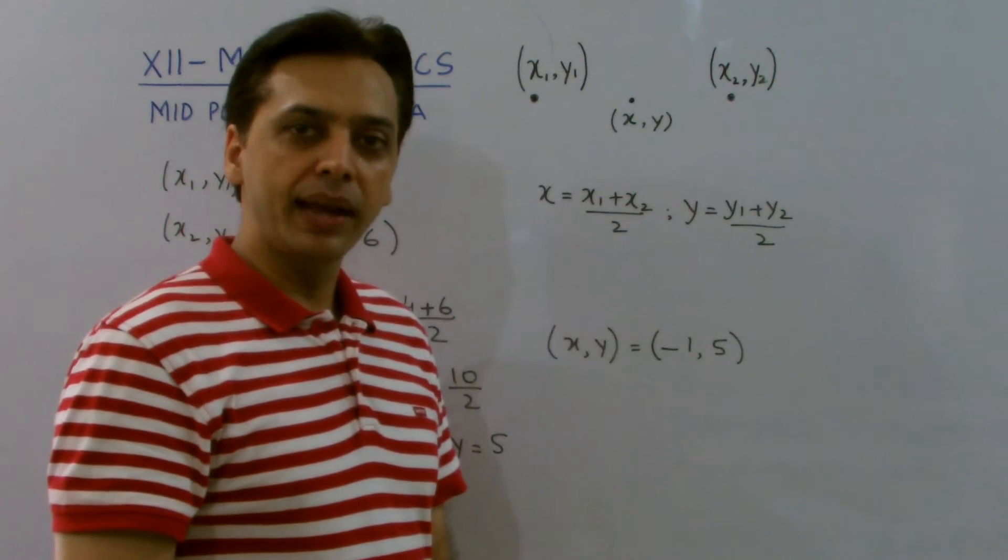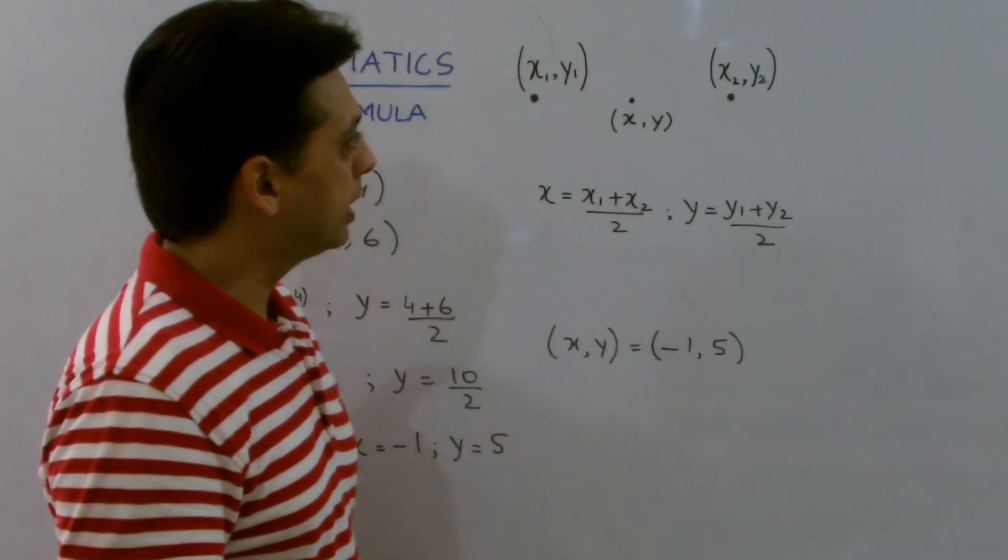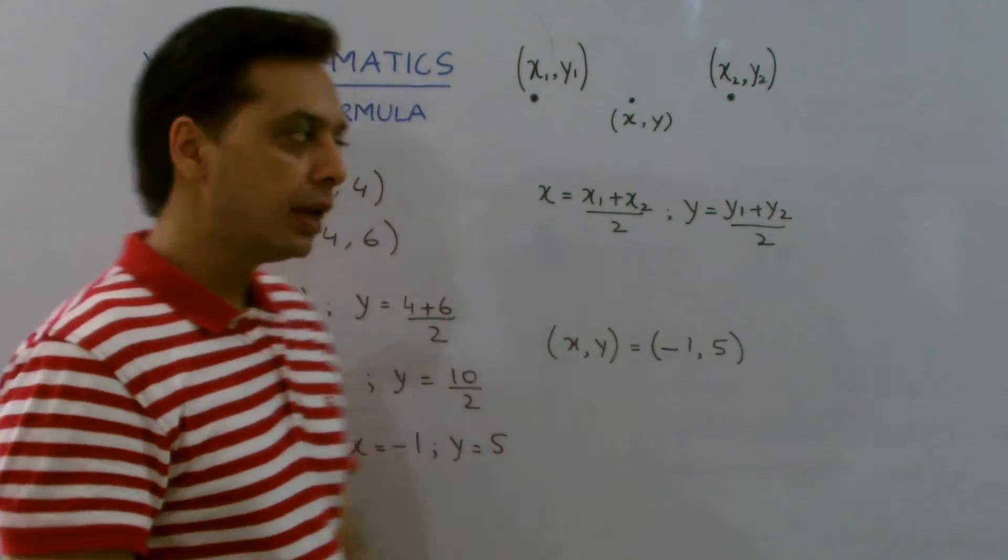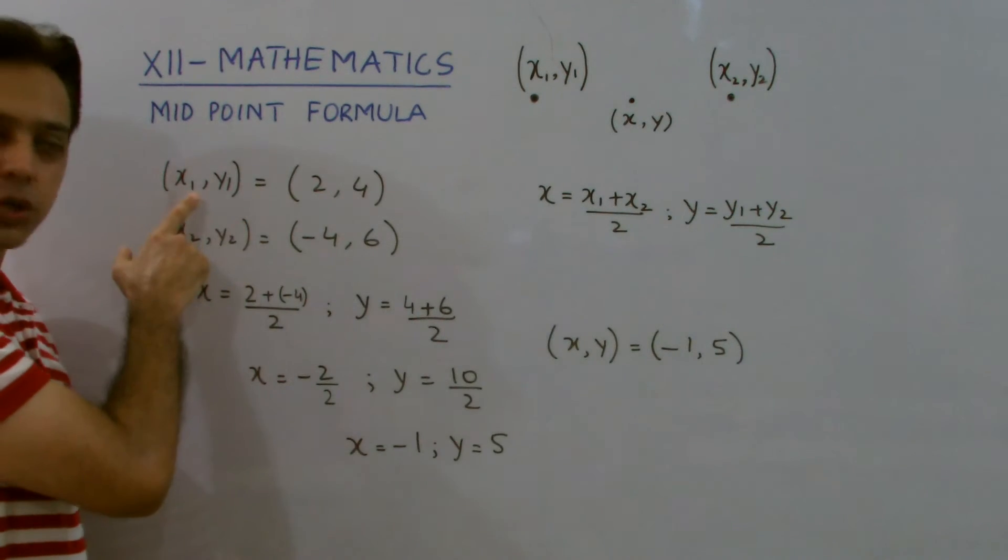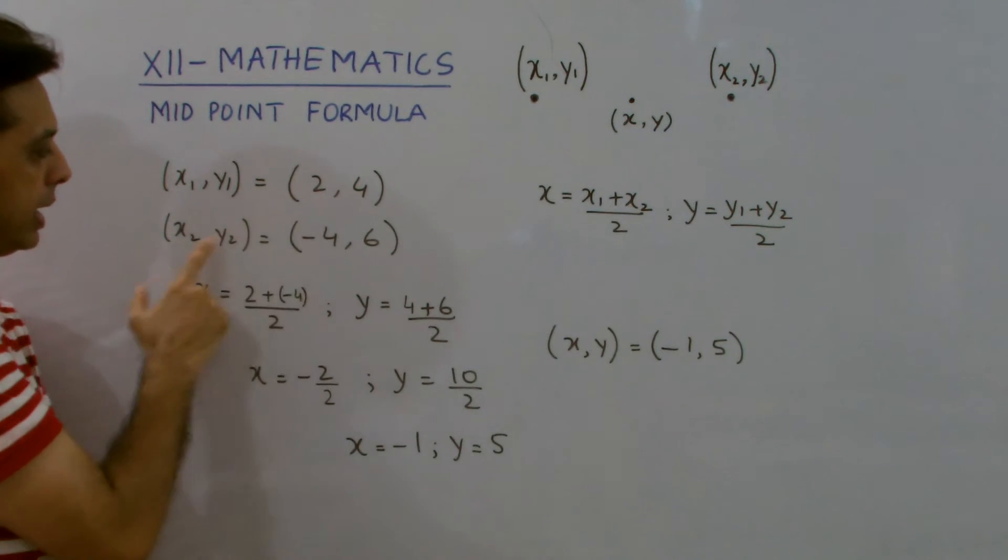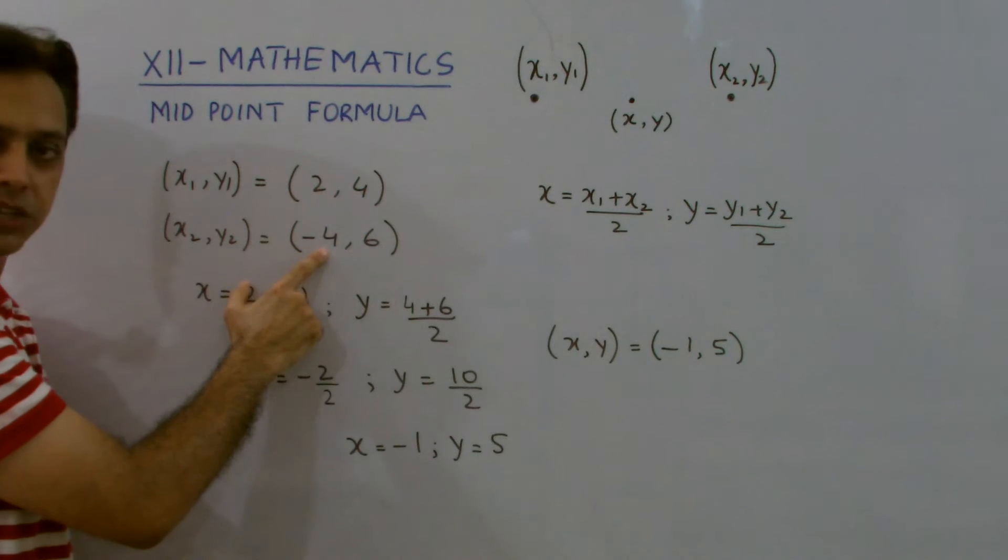Now, we can assume certain numeric values. I suppose (x1, y1) = (2, 4) and (x2, y2) = (-4, 6).